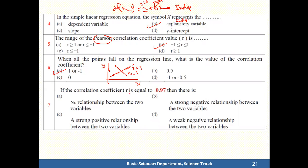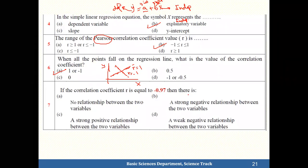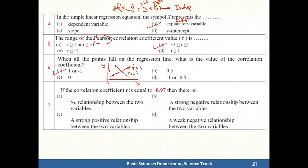If the correlation coefficient r equals negative 0.97, there is a strong negative relationship between the two variables. The negative sign indicates a negative relationship, and 0.97 is close to 1 so it is strong. The answer is b.